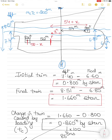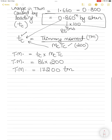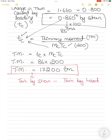So the cargo loaded forward of the center of rotation is at a distance of (54 + x). You can assume x meters forward of midship in the exam — it won't make a difference. If you get a negative answer, your assumption was incorrect and it was the other way around.